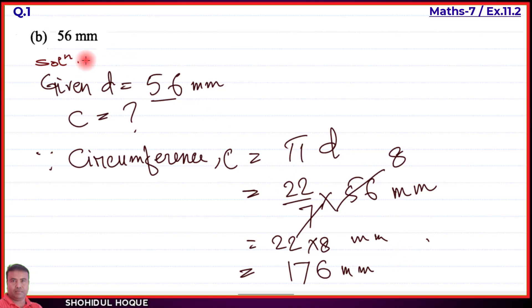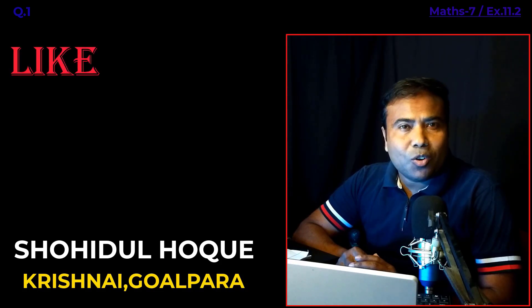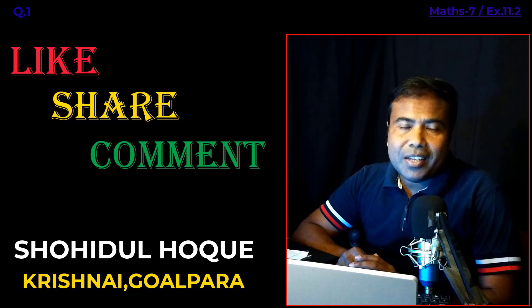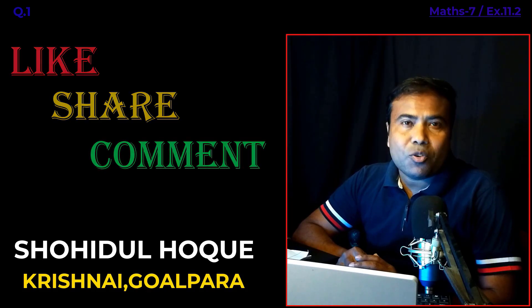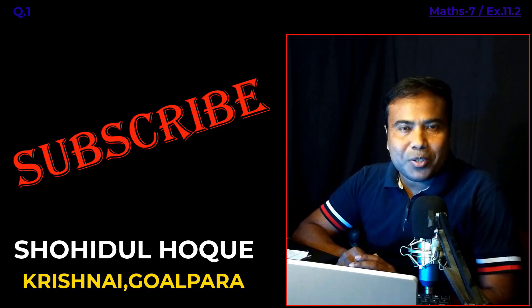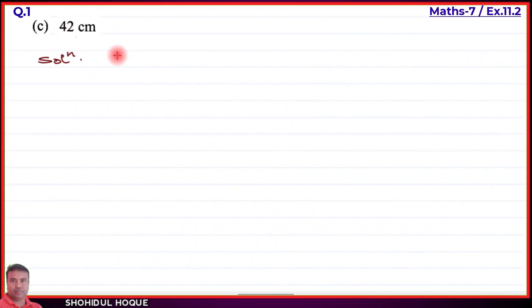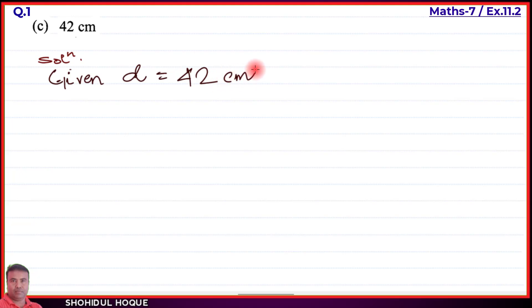So for part B, the circumference of a circle with diameter 56 mm is 176 mm. Now for part C, the diameter is 42 centimeters. So D equal to 42 cm, and we need to find the circumference — circumference equal to question mark.